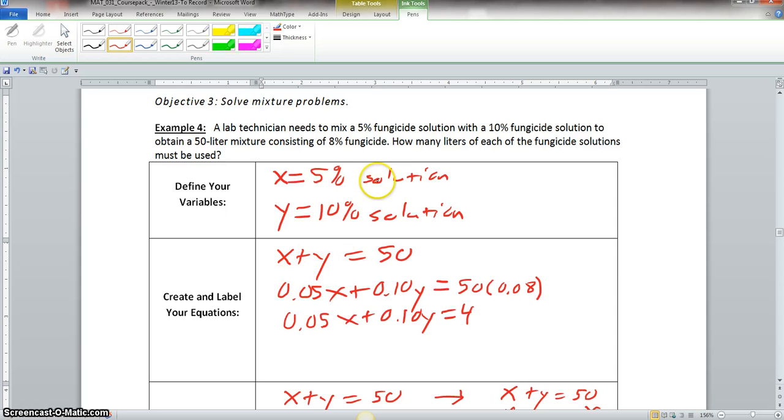We have a 5% fungicide solution, so it'll be 0.05x because that represents the 5% solution. And then we have the 10% solution, which is represented by y, is 0.10y.